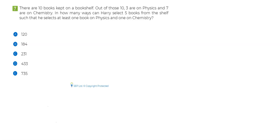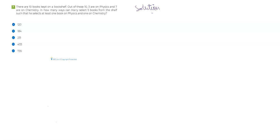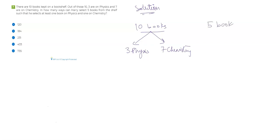If you want, you can pause the video, try the question once, and then resume again to see how to solve it. So in this question, it's given that we have 10 books — three books are on physics and seven of them are on chemistry. Now it's asked: in how many ways can Harry select five books? Our requirement is total five books, and the constraint is that I need to select five books such that I select at least one book on both physics and chemistry.